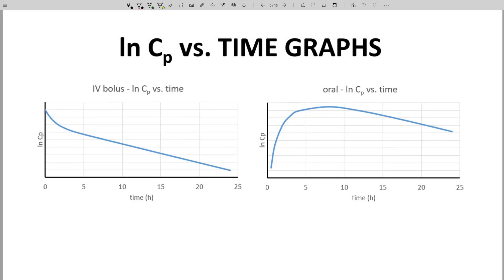On the screen are curves for the same data, but the y-axis is natural log CP instead of just CP. Again, the left shows an IV bolus, and the right shows oral administration.